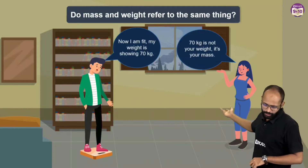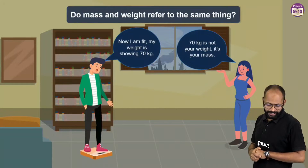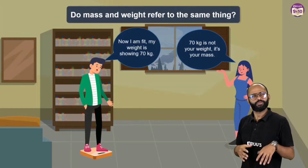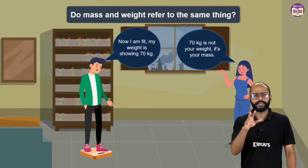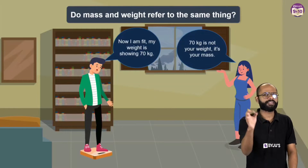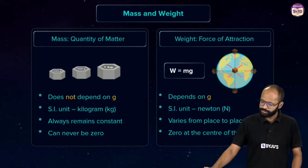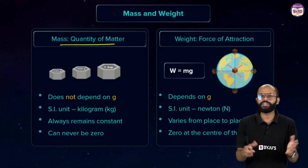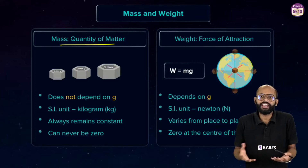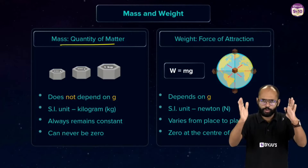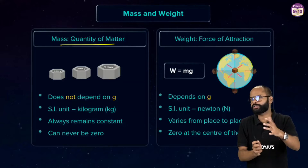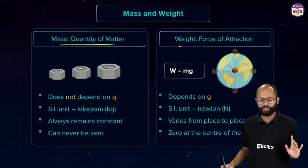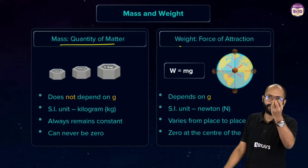If somebody says 'I'm fit, my weight is showing 70 kg,' technically 70 is not your weight — it's your mass. So why do we always answer in kilograms? Mass is the total quantity of matter — how many molecules, atoms, whatever it is made up of. Weight, on the other hand, is the force of attraction between the earth and the body.